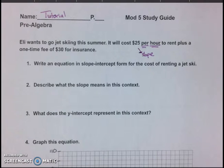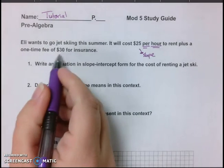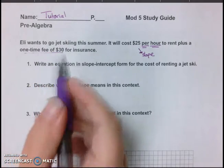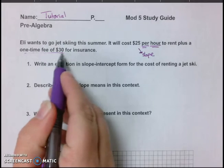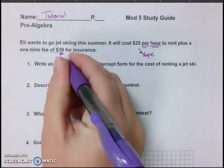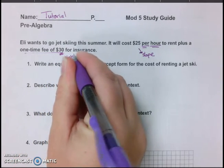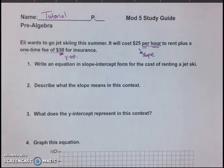So $25 per hour to rent, plus a one-time fee of $30. So see that's one-time fee. So no matter how long you go jet skiing, you always have to pay at least $30. That's your starting. So this number is going to be your y-intercept.